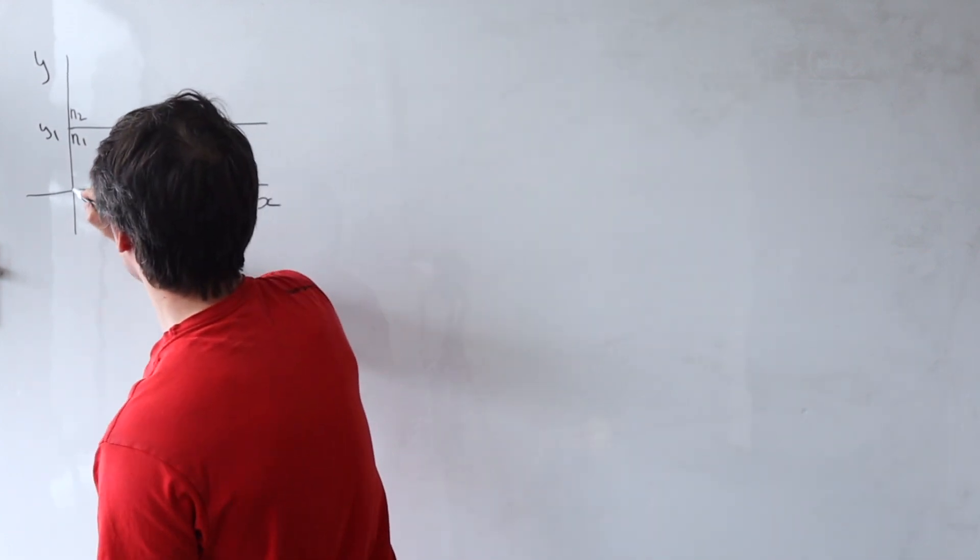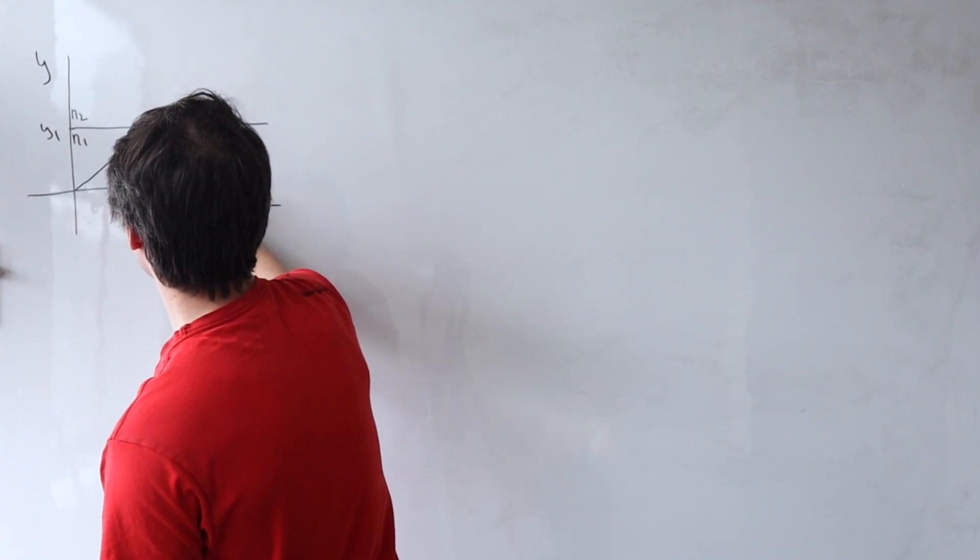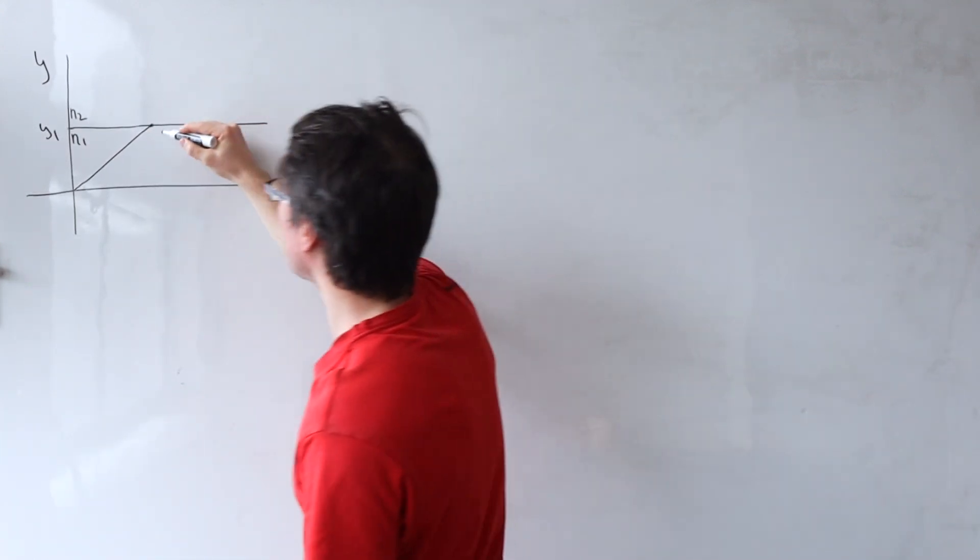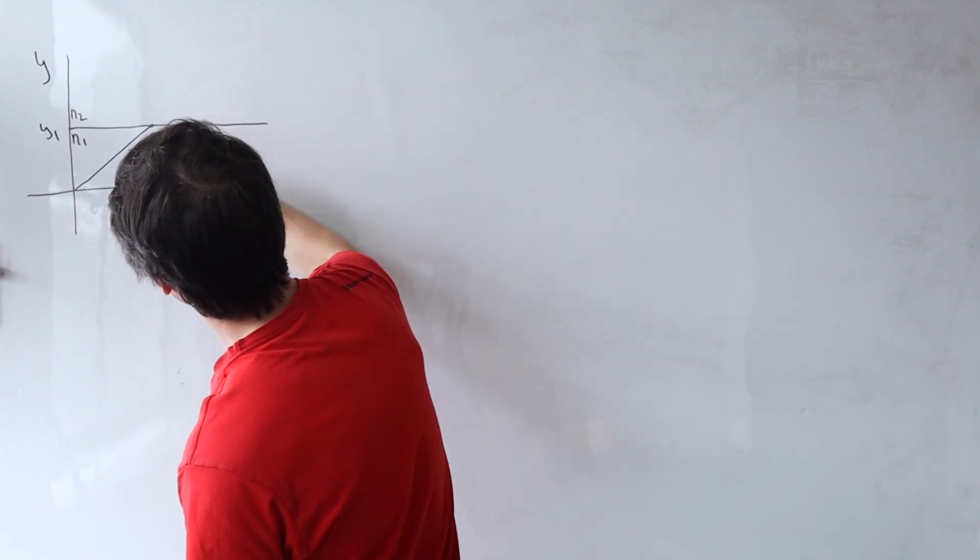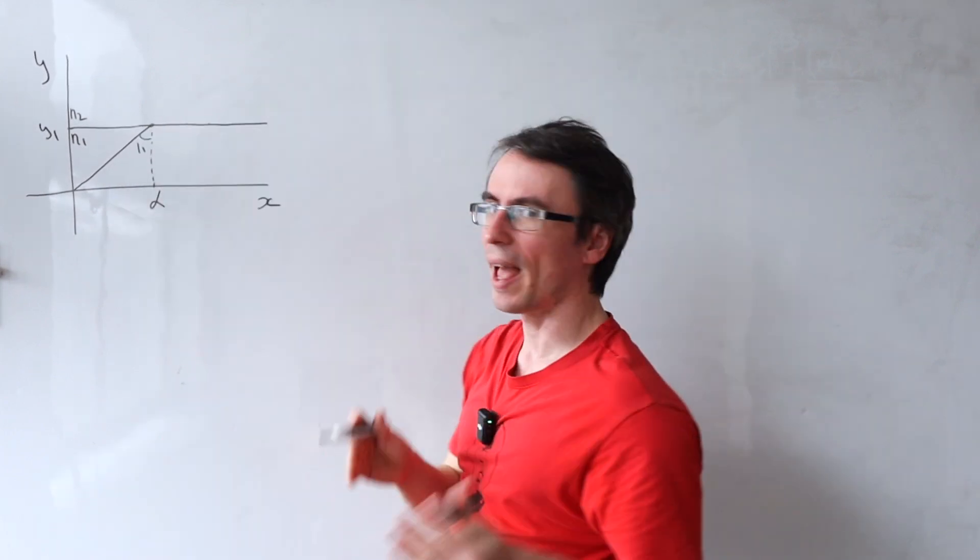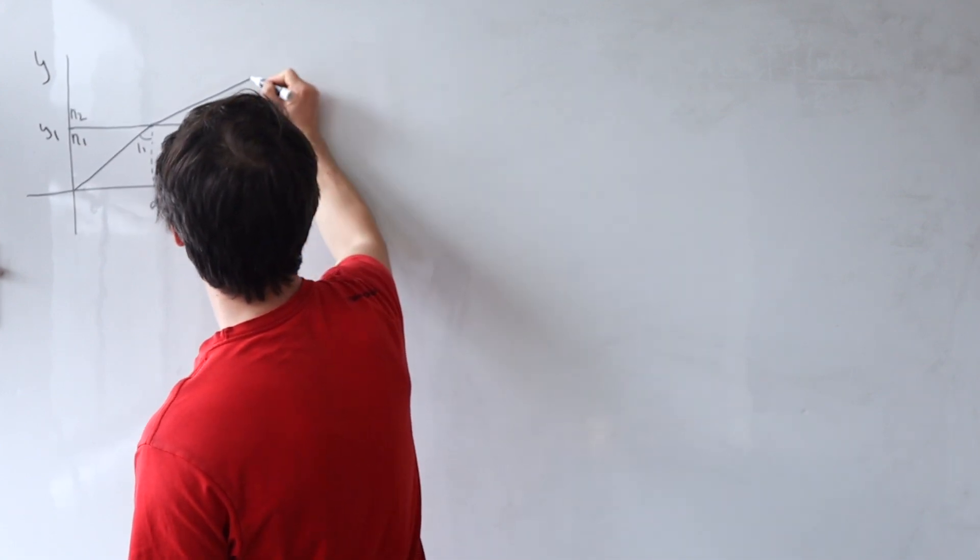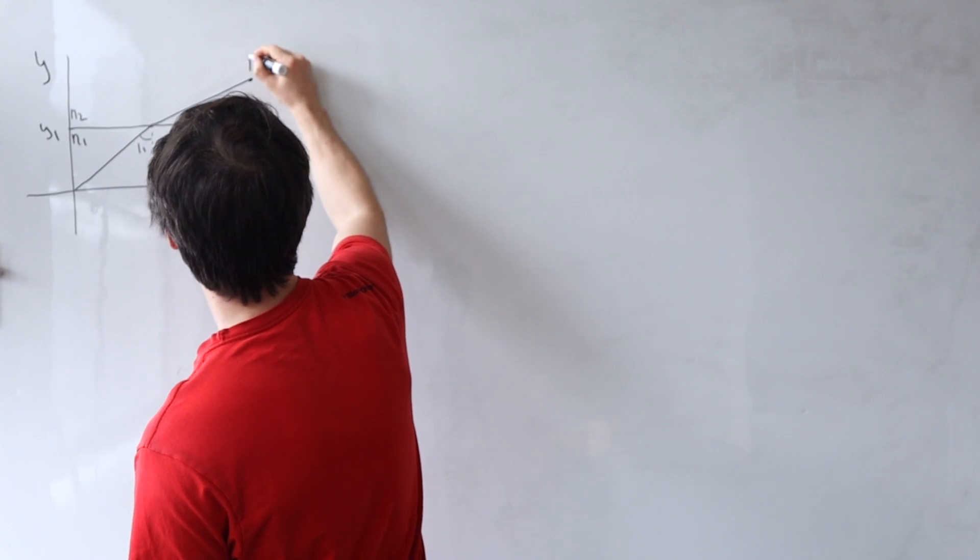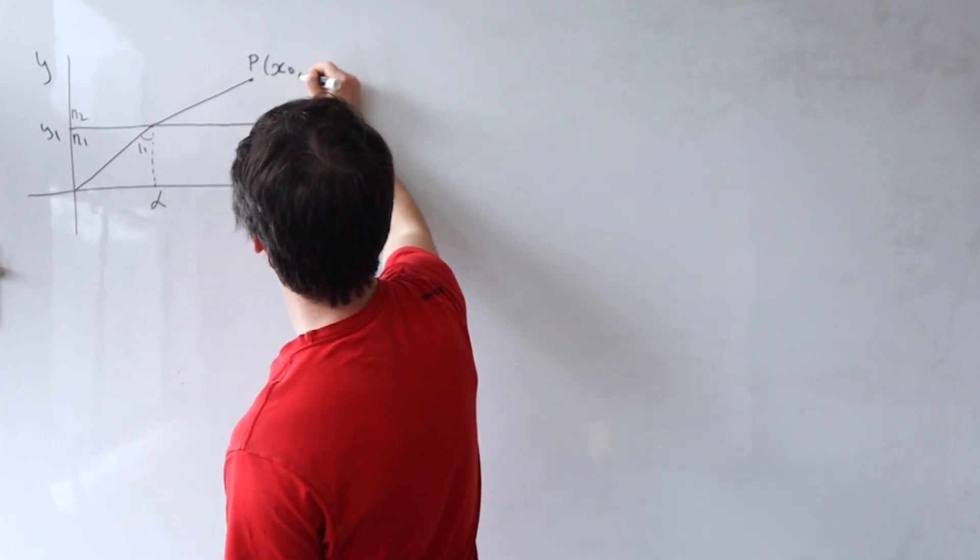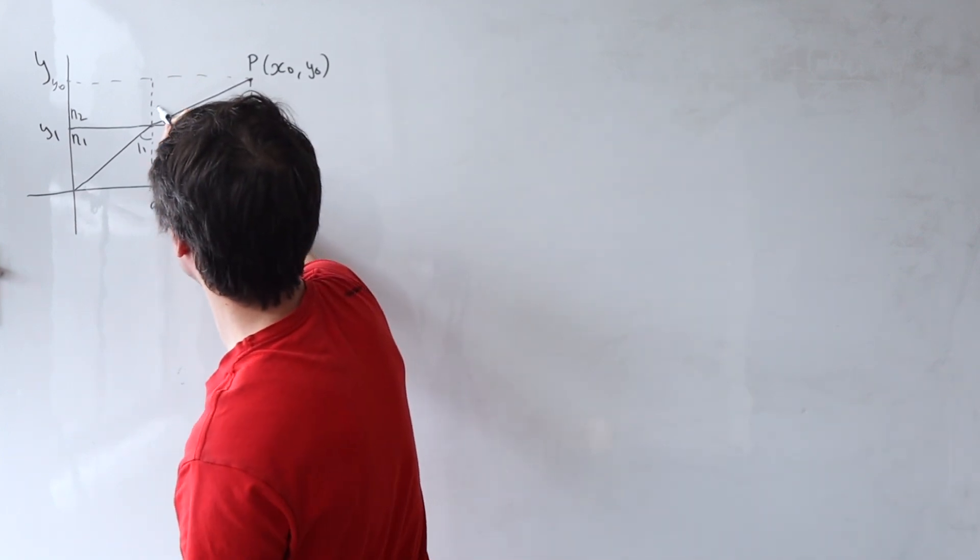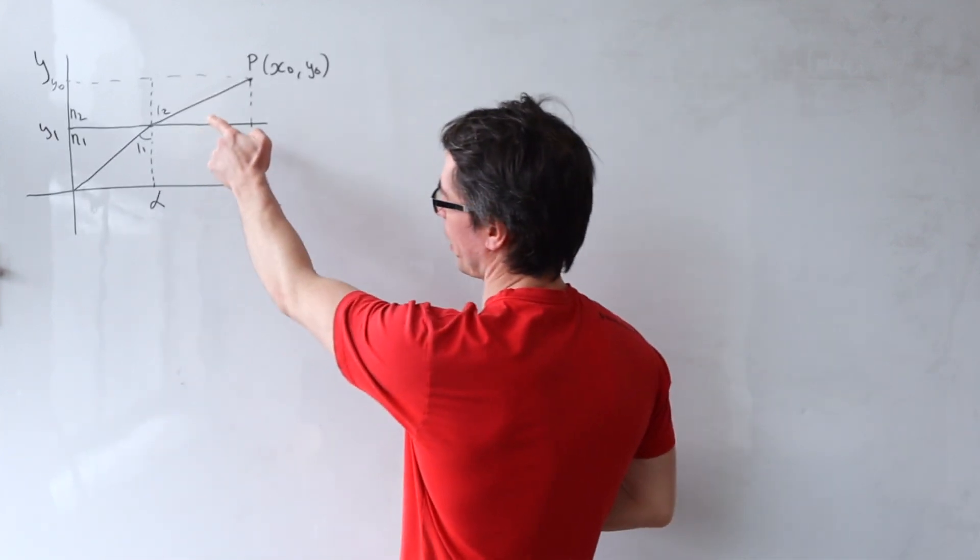A light ray is going to go from the origin and then it's going to strike the boundary at a point. Let's call this point simply alpha and then let's say that the light ray goes here to a point. Let's call that p. Let's give it some coordinates x naught y naught and the angle of refraction is going to be given by i2.